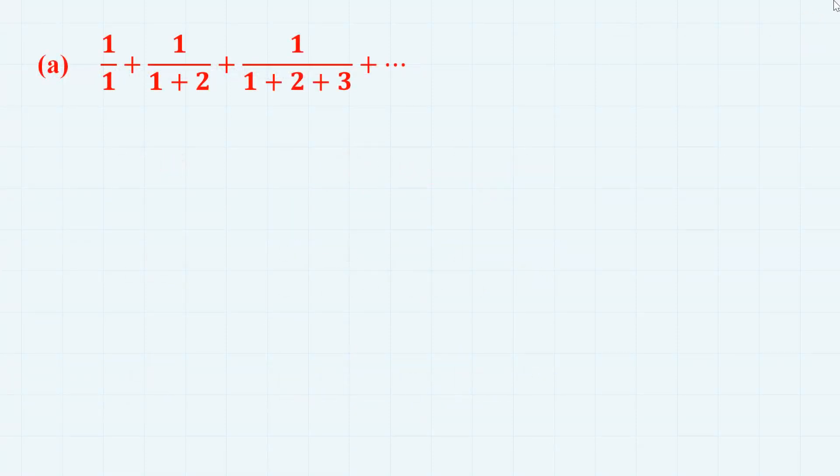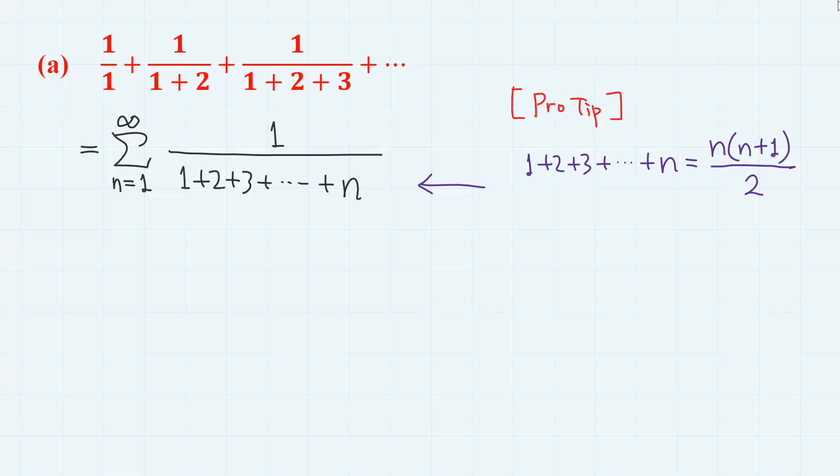The first one. Here, the general nth term of this series can be expressed as 1 over 1 plus 2 plus 3 plus so on plus n. And we add them up from n equals 1 to infinity. Here, we use the all-time famous sum of natural numbers formula, which is sigma 2 over n, n plus 1.